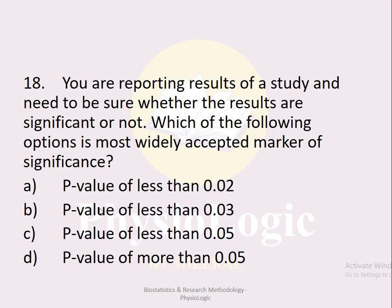MCQ number eighteen: Which of the following is the most widely accepted marker of significance? Option a p-value less than 0.02, option b p-value less than 0.03, option c p-value less than 0.05, option d p-value more than 0.05. The correct option is option c, p-value less than 0.05. A p-value of less than 0.05 is considered a marker of significance — if your statistical results show a p-value less than 0.05, your results are significant.